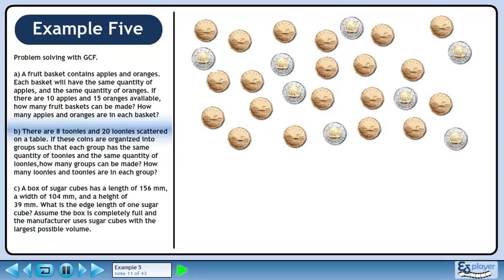Now we'll move on to Part B. There are 8 toonies and 20 loonies scattered on a table. If these coins are organized into groups such that each group has the same quantity of toonies and the same quantity of loonies, how many groups can be made? How many loonies and toonies are in each group? Let's use the GCF to organize this.